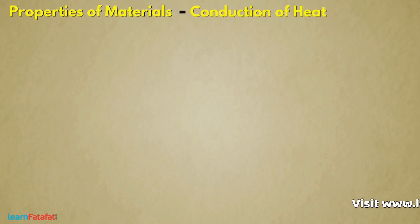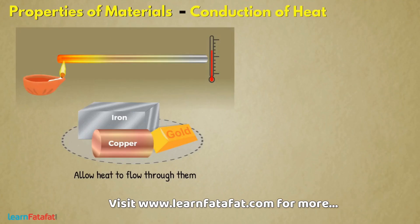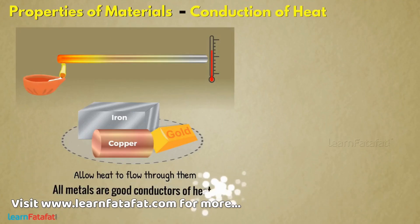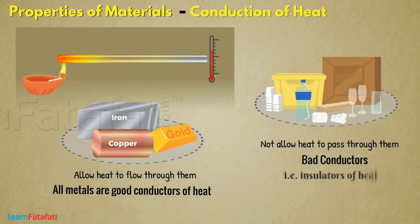Conduction of heat: Some materials allow heat to flow through them. For example, all metals are good conductors of heat. Other materials which do not allow heat to pass through them are bad conductors, i.e., insulators of heat.